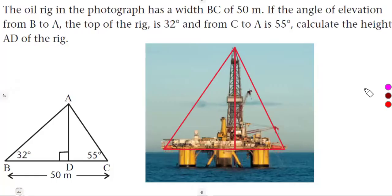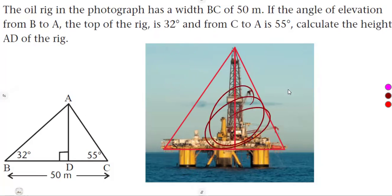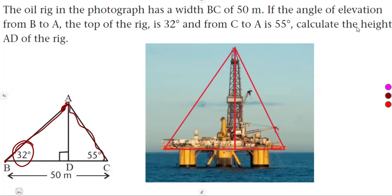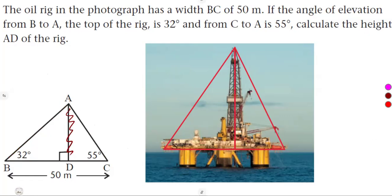From the given question, as a continuation from what we had, this is still applications of 2D trigonometry. We are given that the oil rig in the photography — that is our oil rig — has a width BC, which is the whole part here. The width of the oil rig is 50 meters. The angle of elevation from B to the top at A is 32 degrees, and from C to A is 55 degrees. Calculate the height AD, which is the height of the rig.